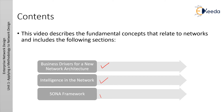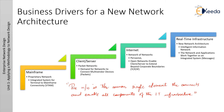We will cover intelligence in the network and the SONA framework. Business drivers for a network architecture: here we show different generations of business — mainframe computer, client-server computer, internet, and real-time infrastructure. The growth of applications and the evolution of IT combine to drive the need for a new network architecture. In today's business environment, intense competition and time-to-market pressure are prompting enterprises to look for new IT solutions that can help them better respond to market and customer demands.